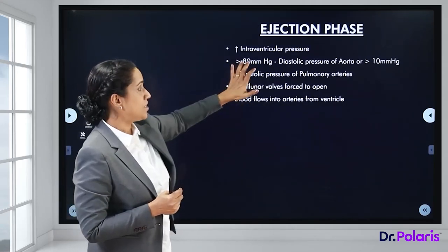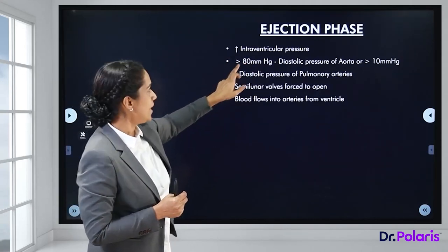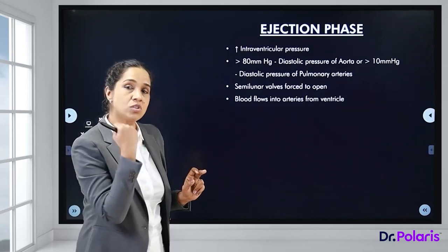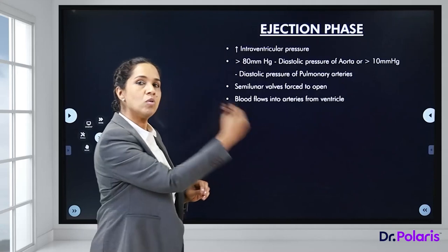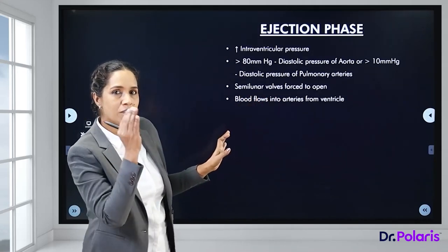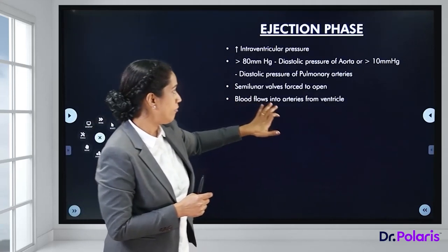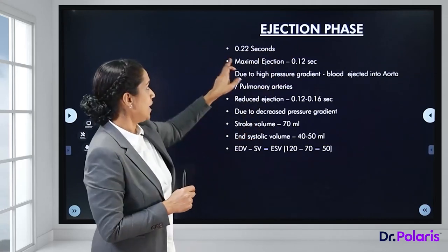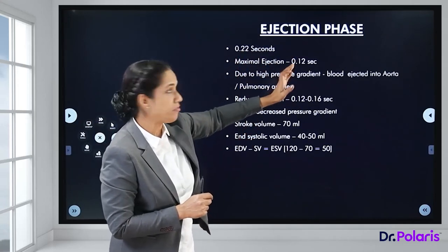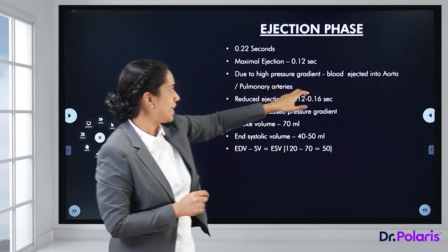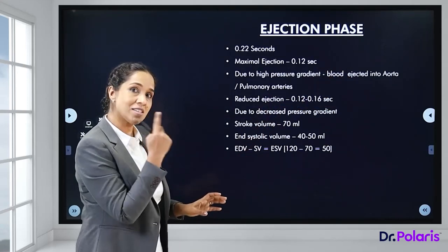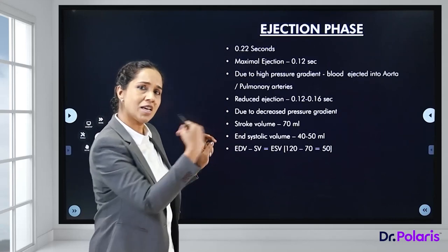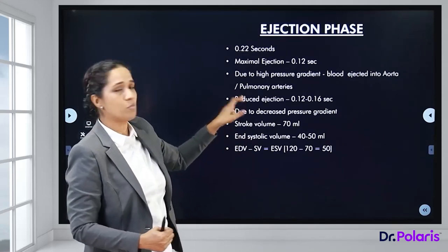In the ejection phase, intraventricular pressure exceeds 80 mmHg (the diastolic pressure of the aorta), forcing the semilunar valves open. Blood then flows from the left ventricle into the aorta, and simultaneously from the right ventricle into the pulmonary arteries. The maximum ejection phase takes 0.12 seconds.